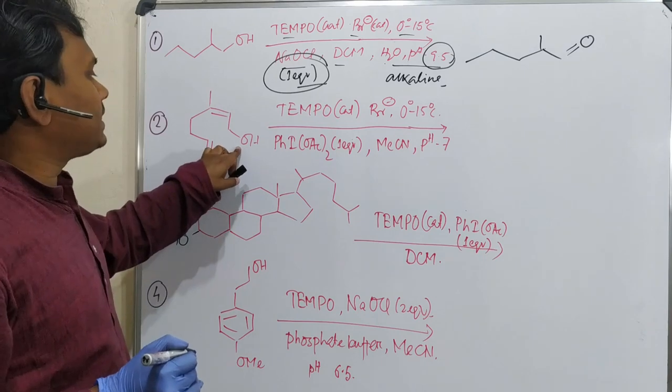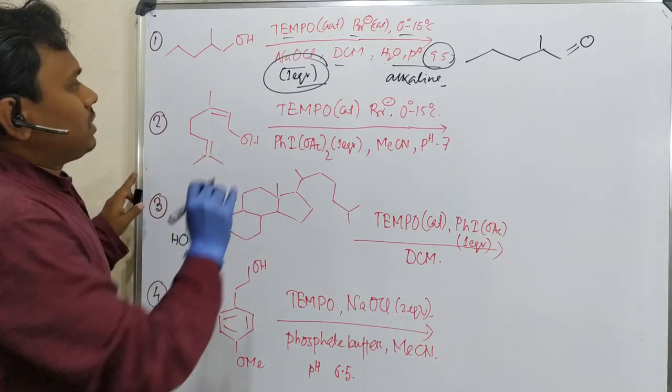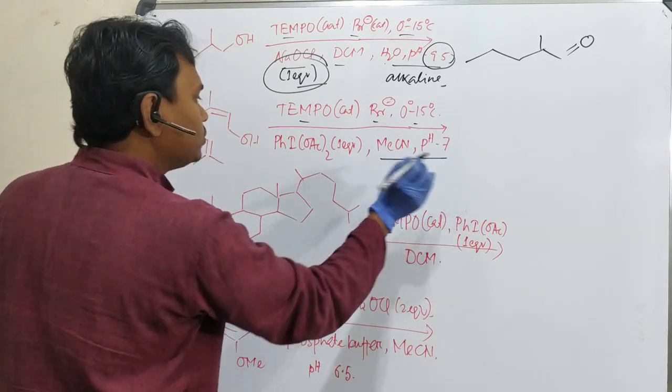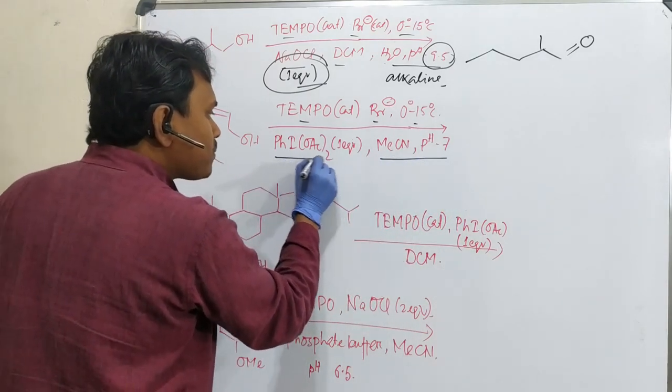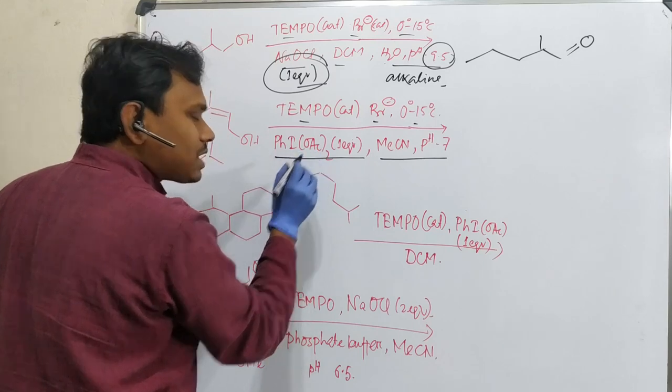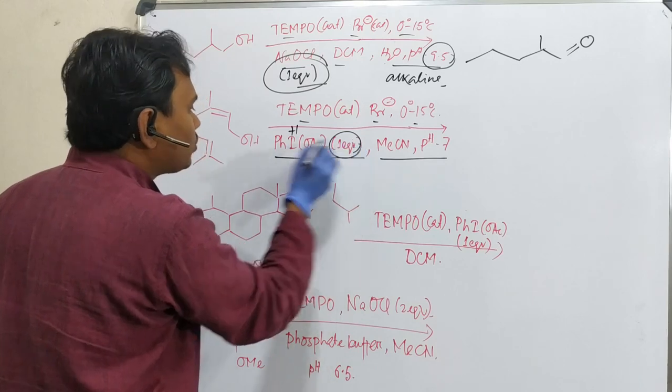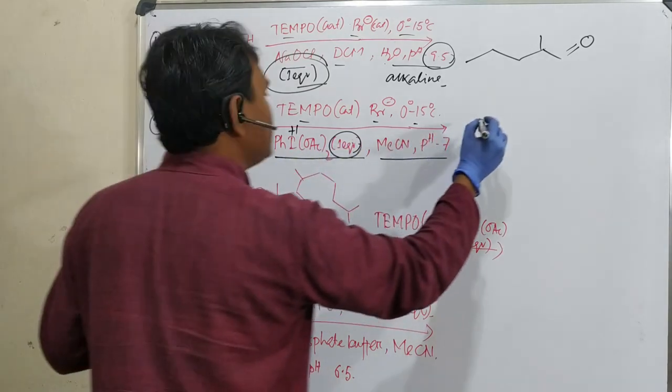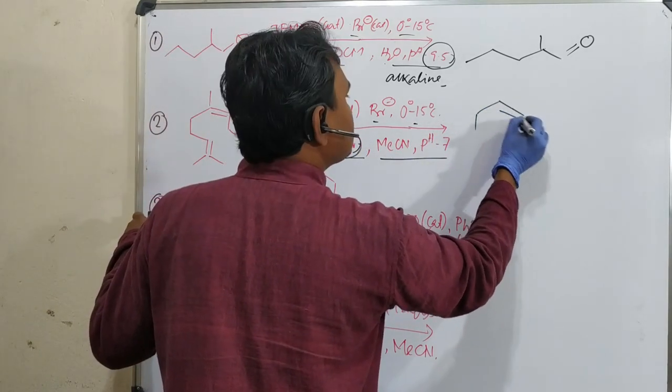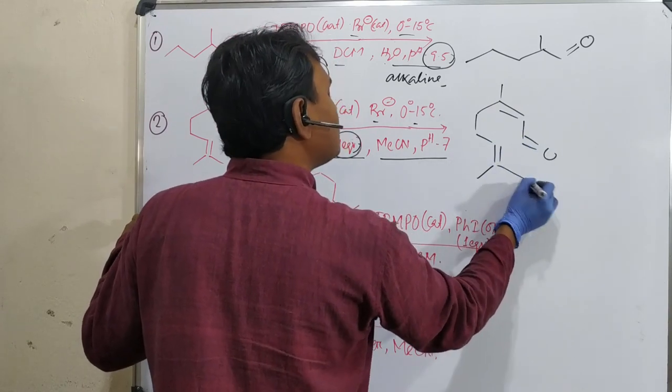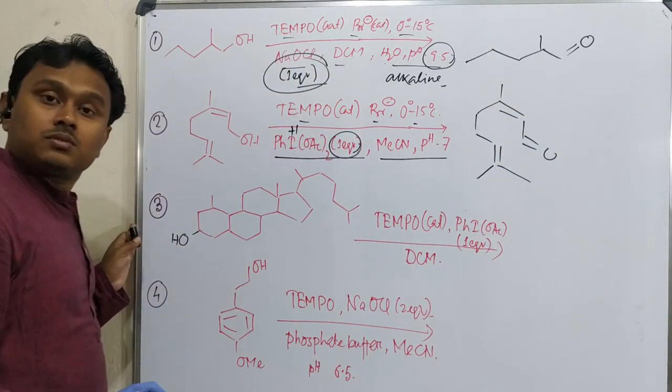Similarly, if you look at the reaction, allylic alcohol, everything TEMPO as catalyst, bromide 0 to 15 degrees, pH 7 neutral no problem. Then this hypervalent iodine, equivalence one. So what it will stop? Aldehyde. So the product is this.